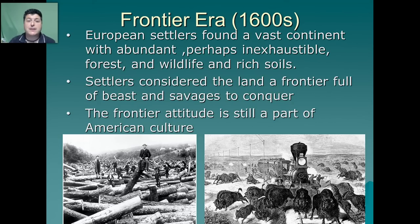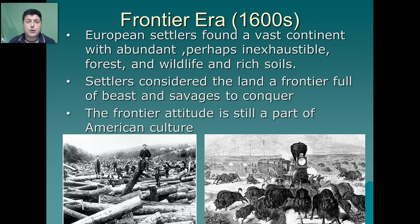The Frontier Era began in the early 1600s with the arrival of the European colonists. These early settlers found a vast continent with abundant, perhaps inexhaustible forests, wildlife, and rich soils. These settlers considered the land to be a frontier full of beasts and savages that were meant to be conquered. And so began many years of environmental degradation as forests were cut down for materials to build cities and many species were hunted en masse for food and materials to clothe this growing populace. In many ways, the frontier attitude is still a part of American culture, as many people still see the United States as a vast continent of perhaps inexhaustible resources.